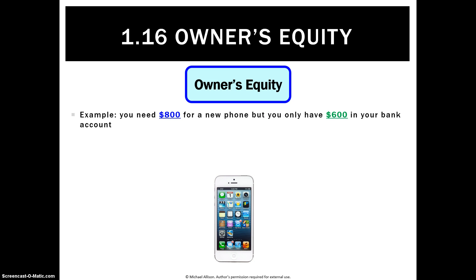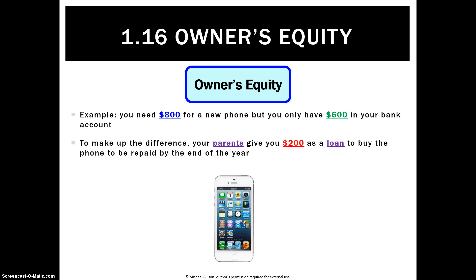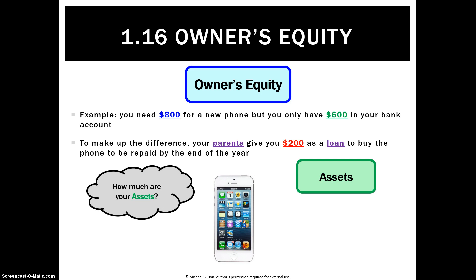An easy way to understand it is to use an example. Pretend you wanted a new iPhone that cost $800, but you've only got $600 in your bank account. To make up the difference, you go to your parents and ask for $200 as a loan to buy the phone, but you have to repay it by the end of the year. So we look at our assets — the resource we control as a result of past events — you've got an $800 phone.